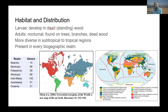The larvae develop in dead wood — in North America mostly in standing wood, but they can also develop in rotting horizontal wood. The adults are active nocturnally, found on trees and branches on dead wood, usually walking around. They're more diverse in tropical and subtropical regions of the world, although they are present in every biogeographic realm.